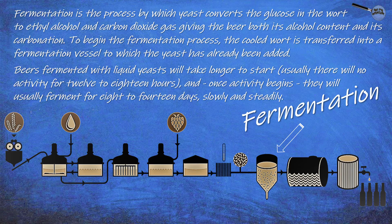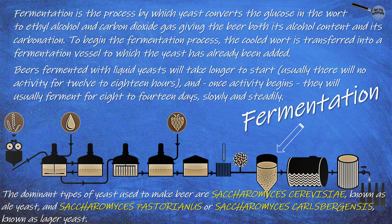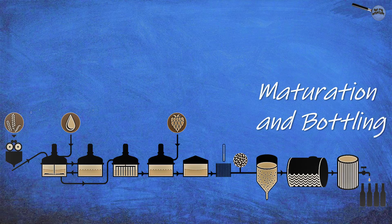Beers fermented with liquid yeast will usually show no activity for 12 to 18 hours, and once activity begins they will usually ferment for 8 to 14 days. The dominant types of yeast used to make beer are Saccharomyces cerevisiae, known as ale yeast, and Saccharomyces pastorianus (or Saccharomyces carlsbergensis), known as lager yeast.